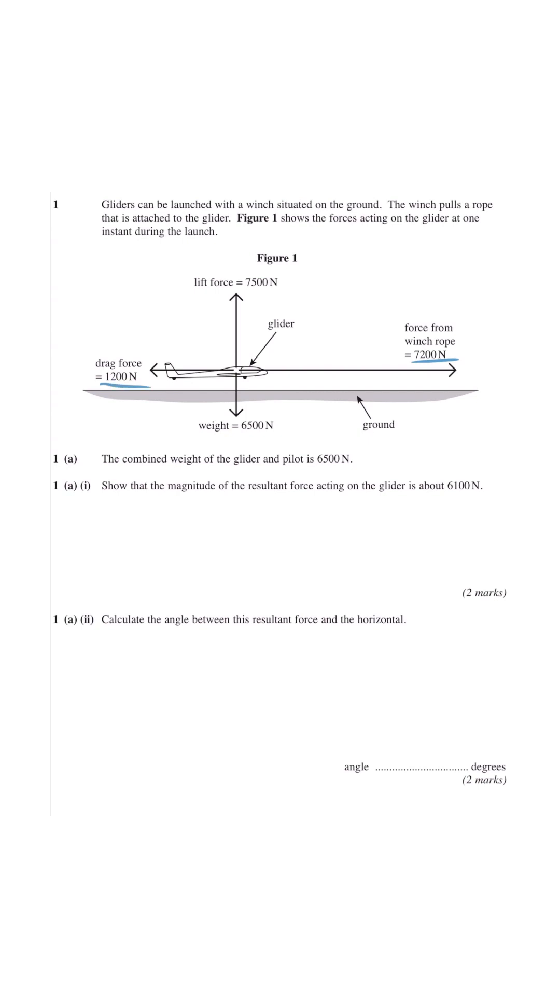For horizontal you've got 7200 and 1200. So you minus the two to find the resultant horizontal which gives an answer of 6000 newtons.